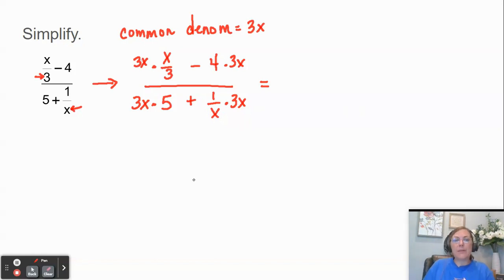Let's go ahead and see what happens. Notice that the 3s cancel here and I get x times x, which is x to the second. Minus on top, 4 times 3x is 12x. Look at the bottom then. 3x times 5, 15x. Plus, now the x's cancel and you get 3.